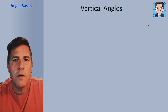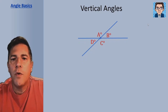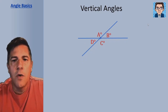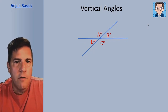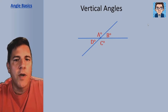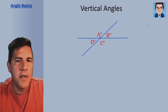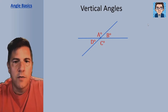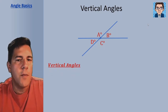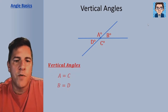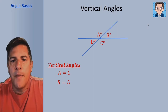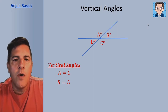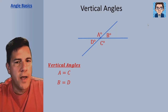Vertical angles are formed when you have two intersecting lines. The angles that are across from each other are what we consider vertical angles. So A and C are going to be vertical angles, and D and B are going to be vertical angles. Vertical angles are going to be equal, so A equals C and B equals D.